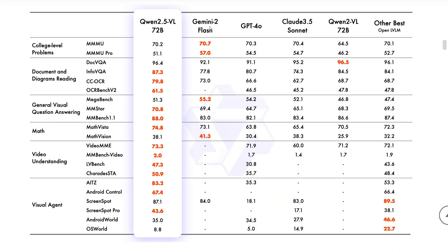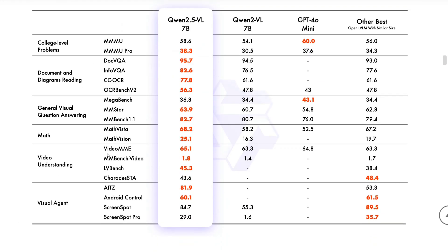Qwen 2.5 VL is able to beat some standard models. As you can see — Qwen 2.5 VL vs. Gemini 2 Flash, GPT-4o, Claude 3.5 Sonnet, and other top LLMs. In most categories — document and diagram reading, general visuals, math, and video understanding — there is no match to Qwen 2.5 VL. For video as input, Qwen 2.5 VL is the best model out there right now. Even the 7B model leads the chart, and in the 3B arena as well, the model looks to be a king.